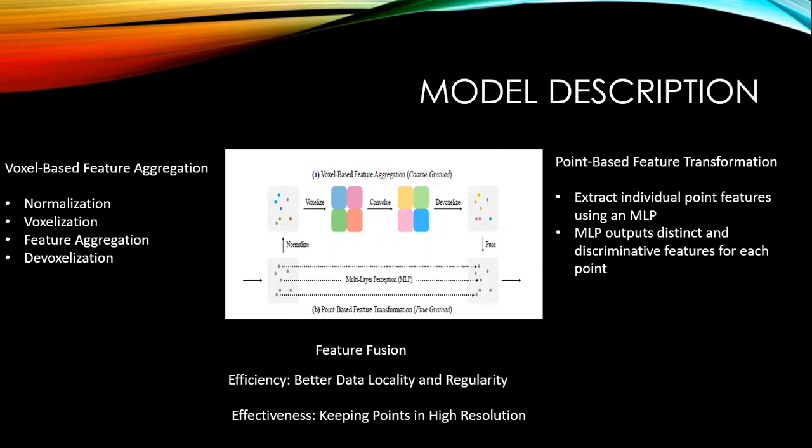Either voxelization or devoxelization requires one scan over all points, making the memory access linear. The point-based branch extracts the feature of each individual point using MLP, which outputs distinct and discriminating features of each point. Then feature fusion is done by aggregating both the individual branches.